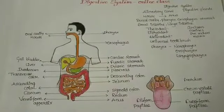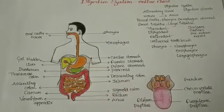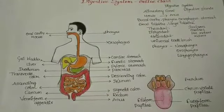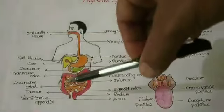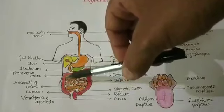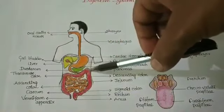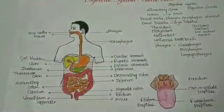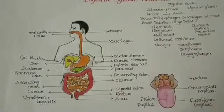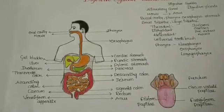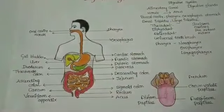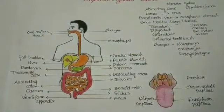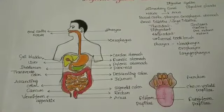The caecum opens into the colon, which is divided into ascending, transverse, descending, and sigmoid colon. The colon leads into the rectum, which is a small dilated sac-like structure. The rectum leads into the anal canal that opens into the anus.